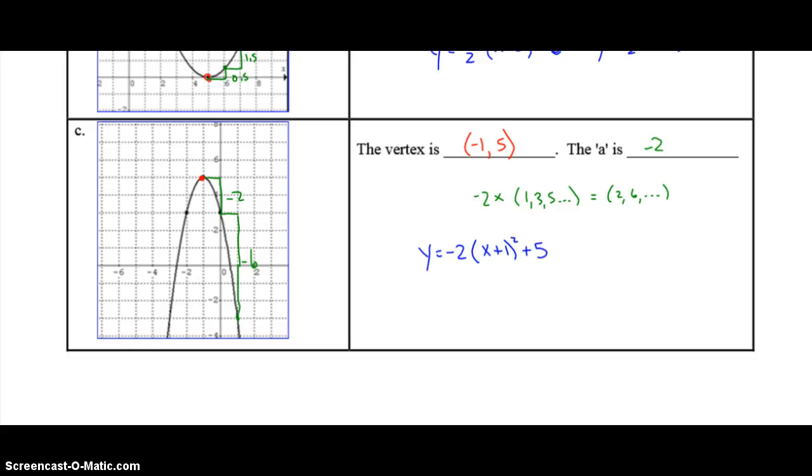So remember when this goes into y equals a, x minus h squared plus k. Since the h value is negative 1, you have x minus negative 1. So that's why it looks like x plus 1. Your k value is 5. And your a value is 2, because that's what you have to multiply. Your step pattern by to get, oops, negative 2, negative 6.